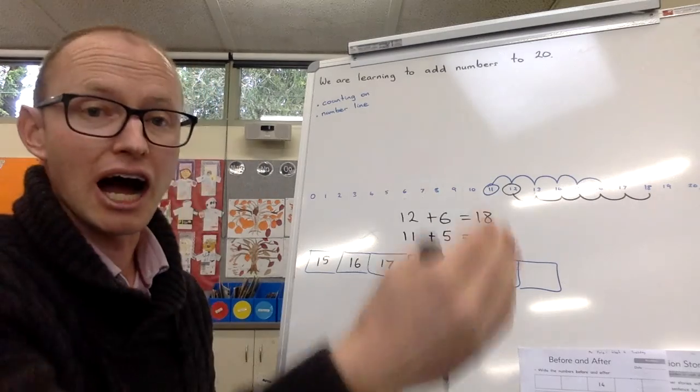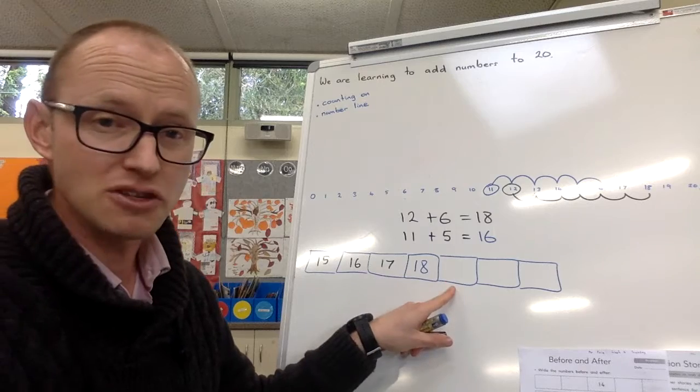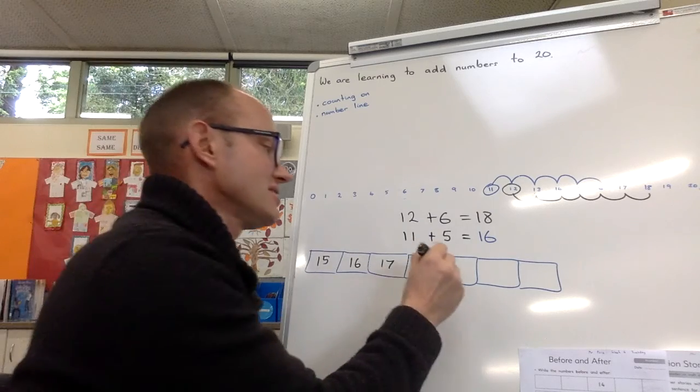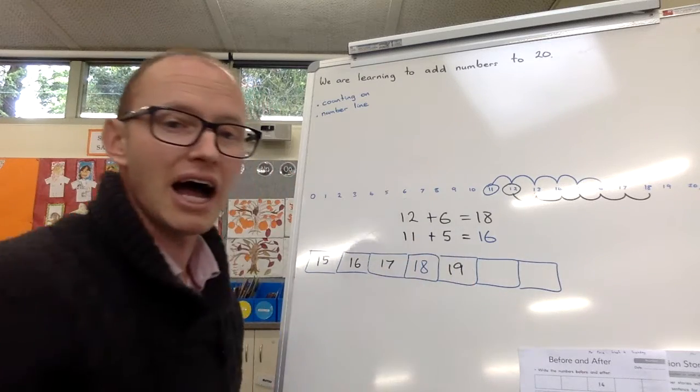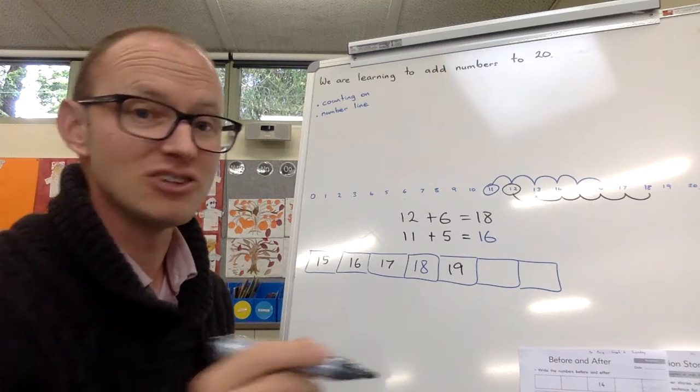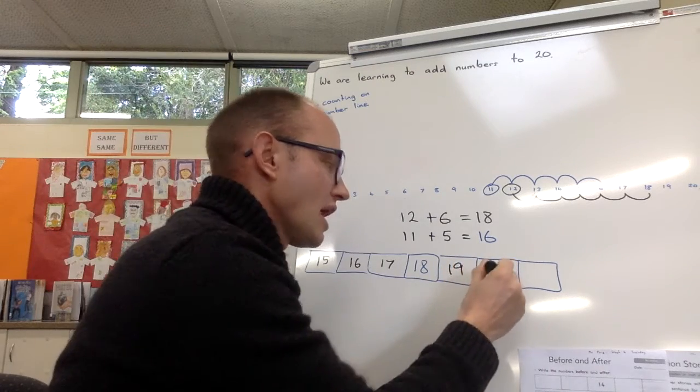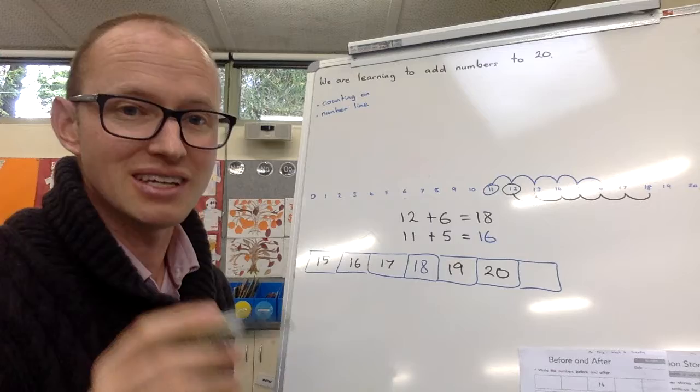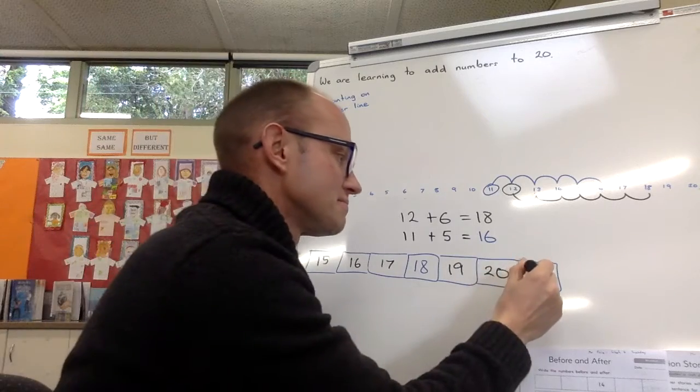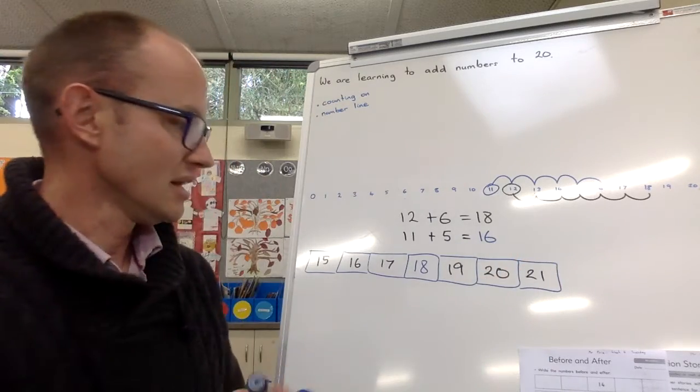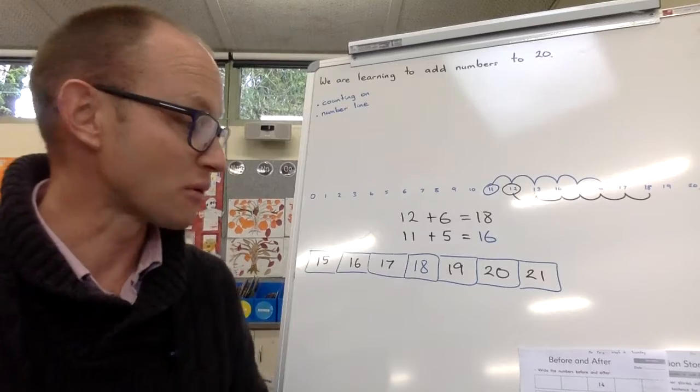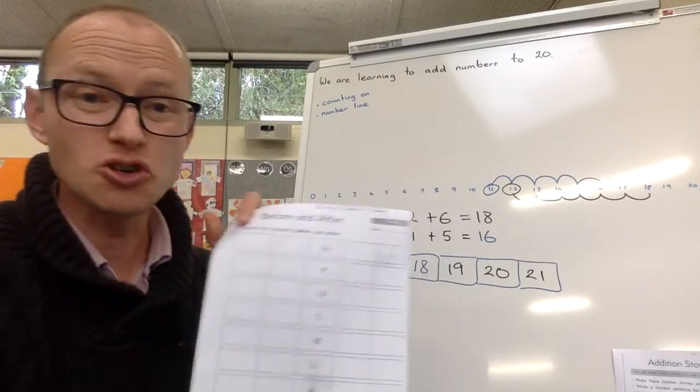Okay, so those are the numbers before. Now we're going after. What is the number after 18? That's it, 19. What's the number after 19? Yeah, 20. And what's the number after 20? Yeah, you got it, 21. So that's our before and after. Just a little bit of practice. You've got this here, should be pretty quick.